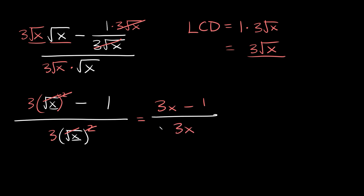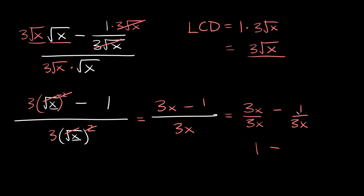You could technically leave your final answer as (3x minus 1) over 3x, but you could simplify it just a little bit more. Since we have two terms, 3x and minus 1, we can split into two fractions: 3x over 3x minus 1 over 3x. The 3x over 3x is just 1, so the final answer is 1 minus 1 over 3x.